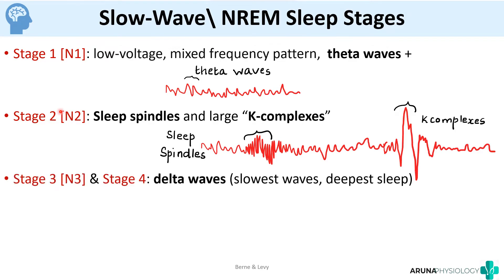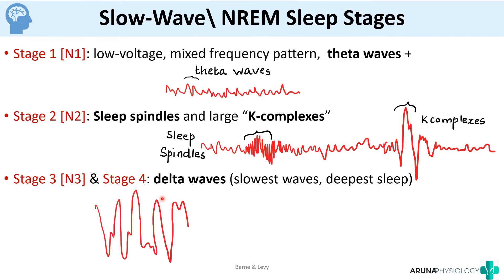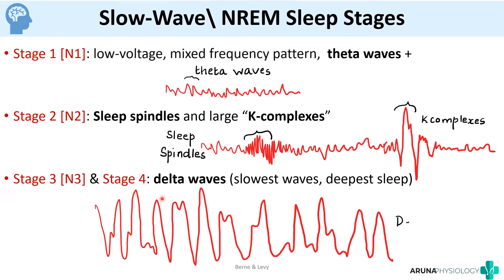In stage 3 and stage 4, according to the American Academy of Sleep Medicine these have been combined into one stage. The characteristic feature of stage 3 and stage 4 is delta waves — this is deep sleep. A useful mnemonic: D and D — deep sleep, delta waves. EEG changes are important from an exam point of view, and it's good to be able to draw the diagram when EEG changes are asked.